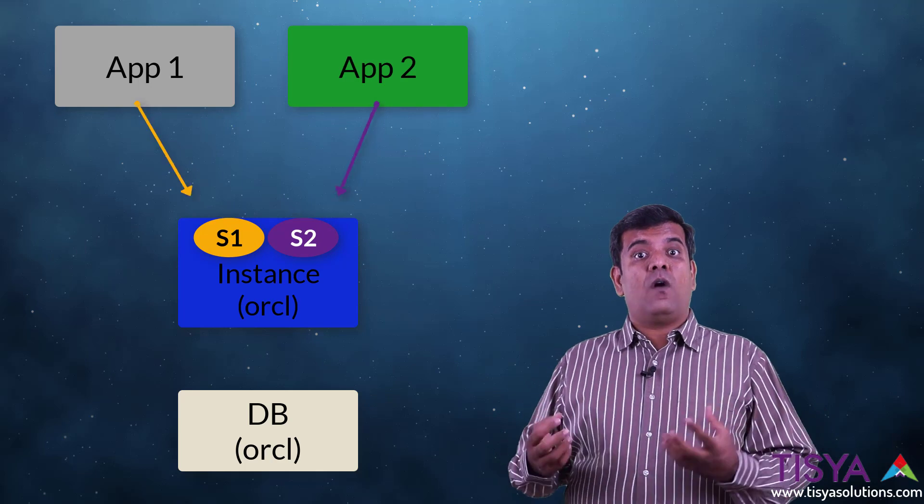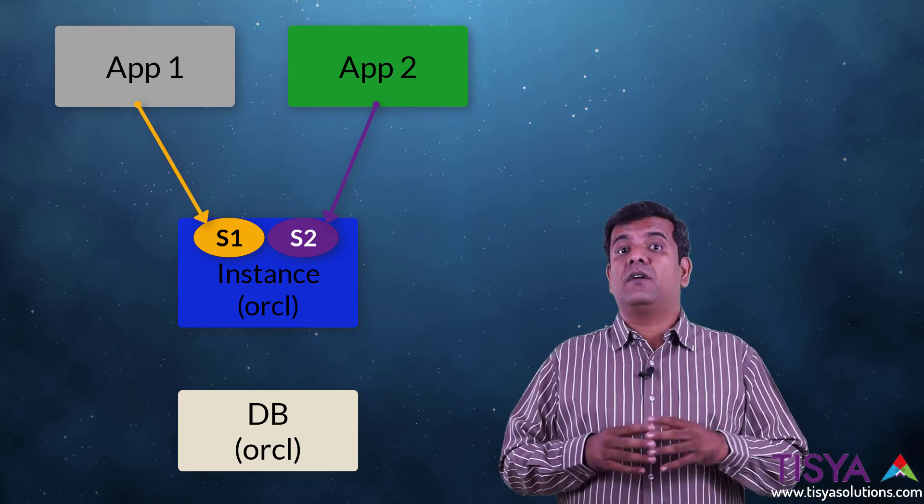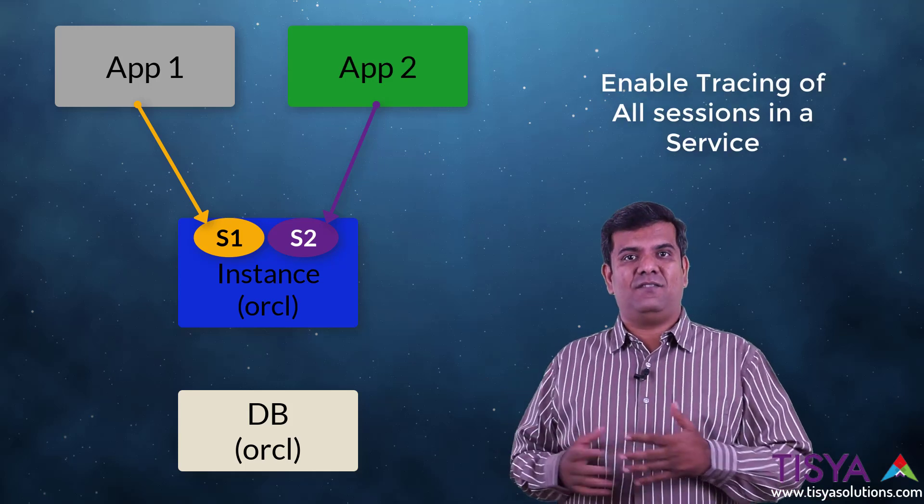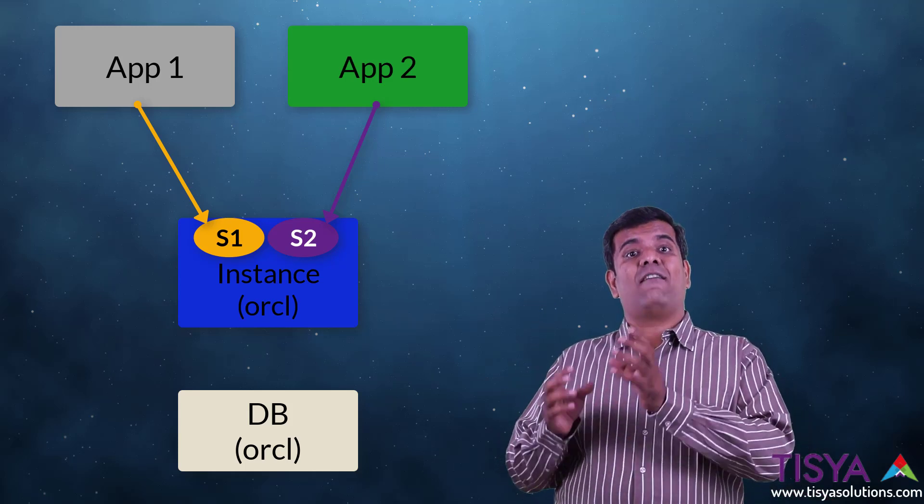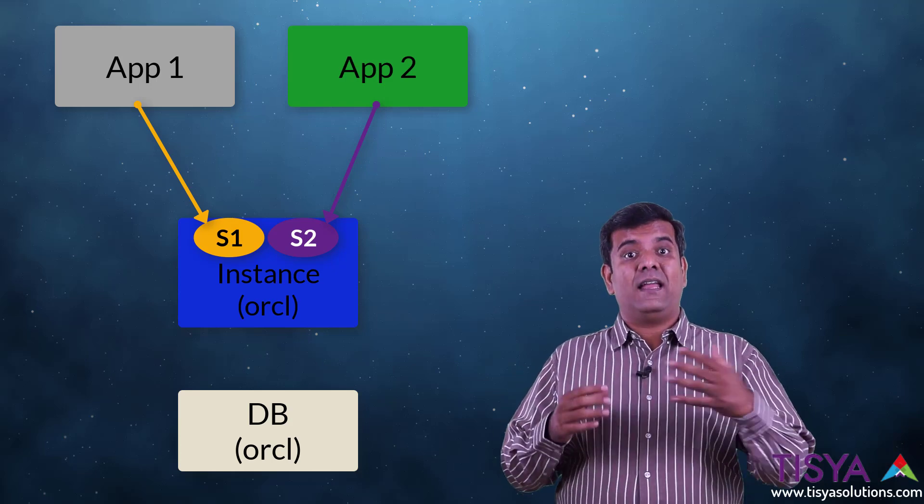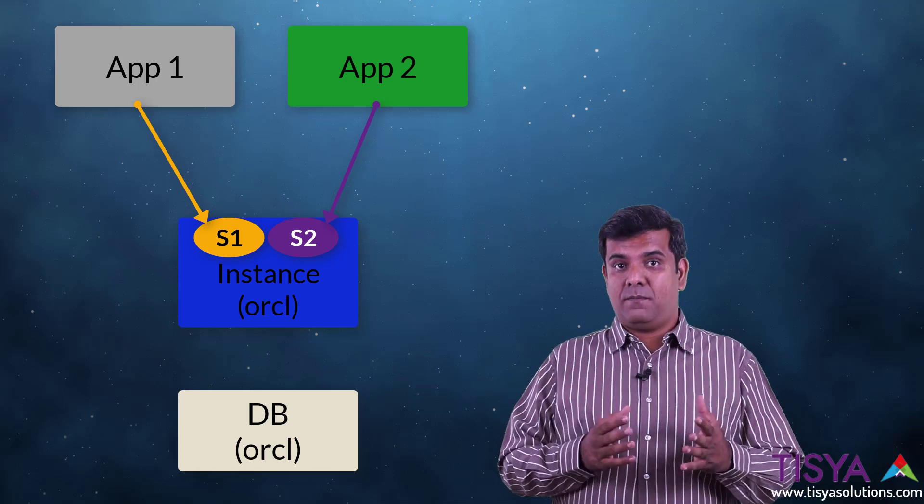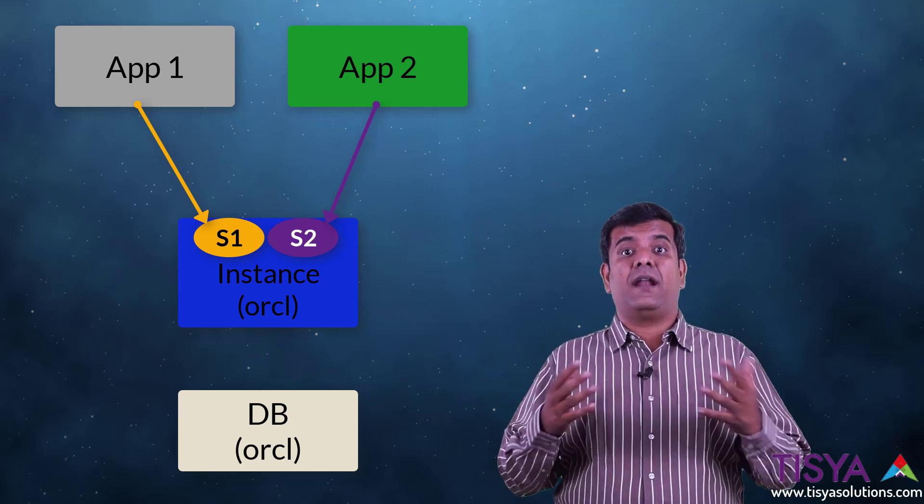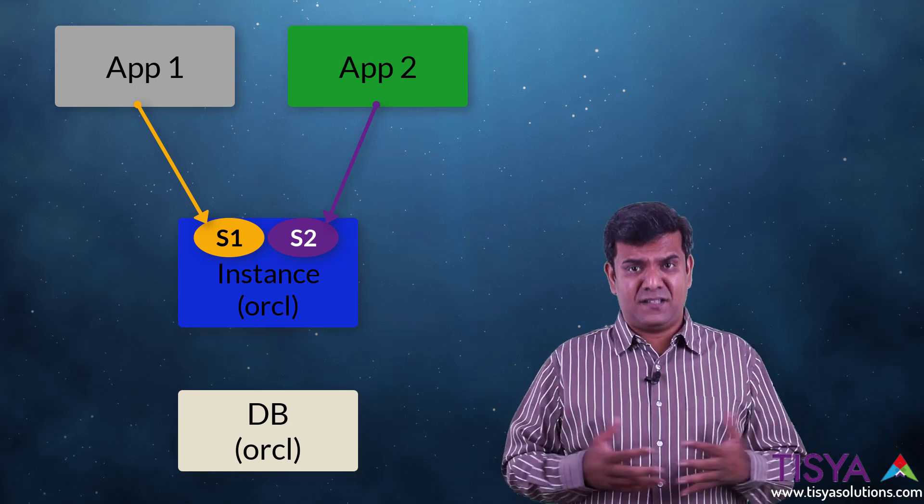Beyond that, if you want to trace all connections from application one to see what it is doing, you can enable tracing at a service level. And beyond that, within a service, you can have modules and actions. In the performance playlist, I will have videos about what is a module and what is an action, and how you can use it to do troubleshooting. This is in a single instance environment.